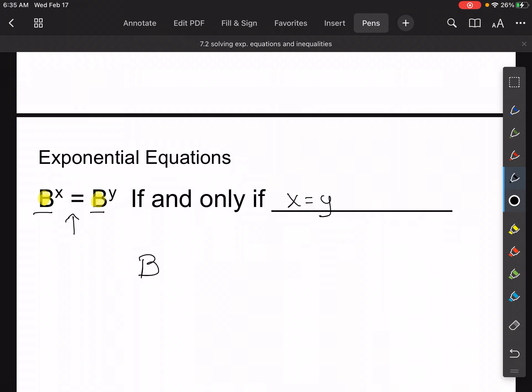So why is that handy to us? Well, what if I have like, let's just put some numbers in here. What if I have 3 to the X is equal to 3 to the third? If this is a true statement, then X must equal 3, because 3 to the third is the only thing that equals 3 to the third. That's what this is saying. So we're going to use that little rule today.